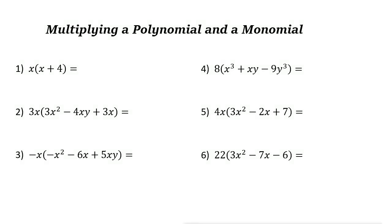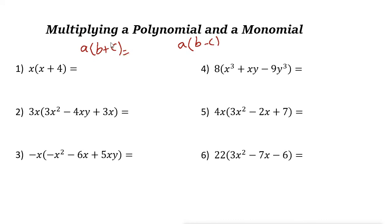Multiplying a polynomial and a monomial. When you multiply a monomial by a polynomial, we need to use the distributive property. The distributive property states: a times (B plus C) equals AB plus AC, and a times (B minus C) equals AB minus AC.